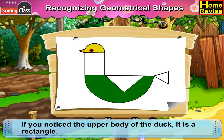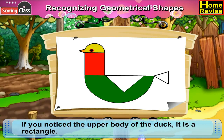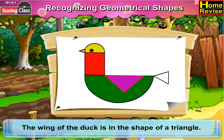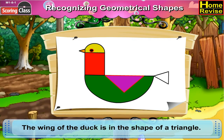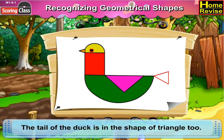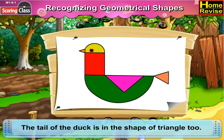If you notice the upper body of the duck, it is a rectangle. Now the wing of the duck is in the shape of a triangle. The tail of the duck is in the shape of a triangle too.